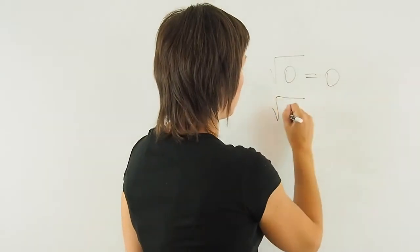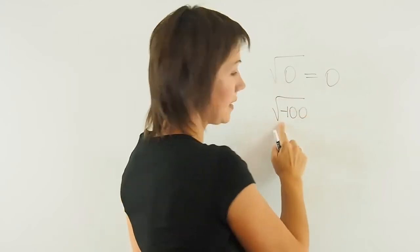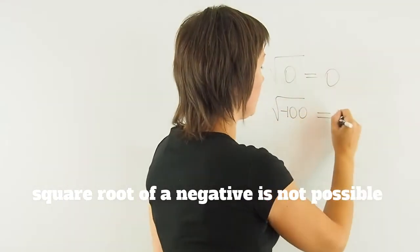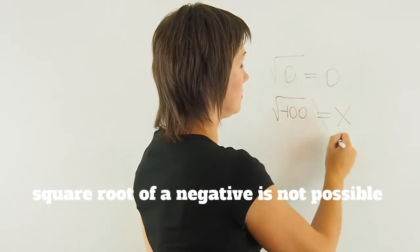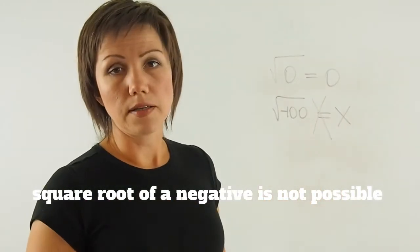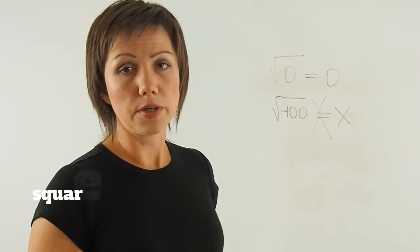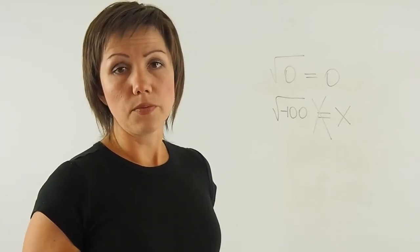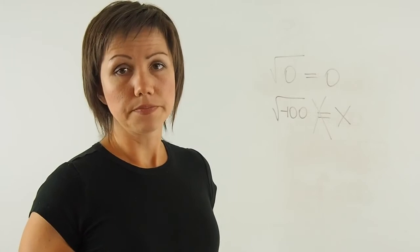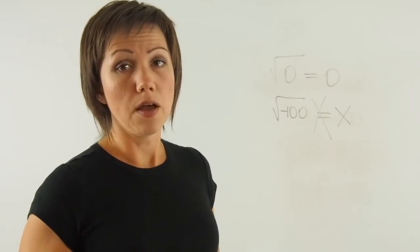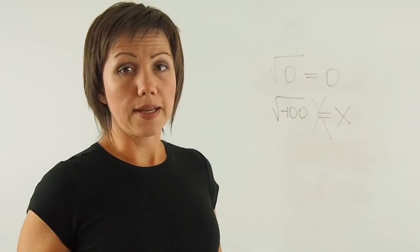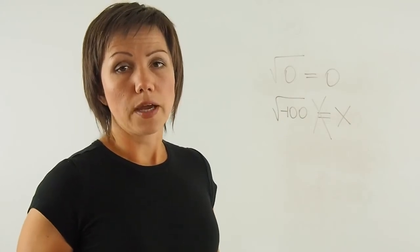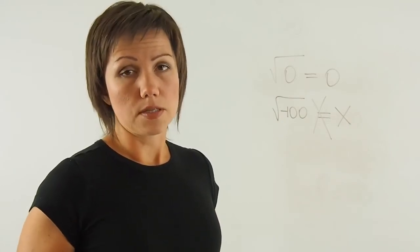If the number under the square root is a negative number, like negative 100, then there is no answer. You cannot find the square root of a negative number, since there is nothing multiplied together that will produce a negative number if those two numbers are identical, whether they're positive or negative. Anything squared will always be a positive number.